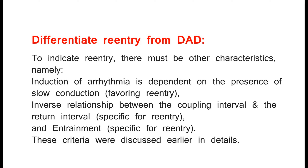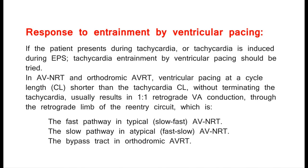Response to Entrainment by Ventricular Pacing: If the patient presents during tachycardia, or tachycardia is induced during EPS, tachycardia entrainment by ventricular pacing should be tried. In AVNRT and orthodromic AVRT, ventricular pacing at a cycle length (CL) shorter than the tachycardia CL, without terminating the tachycardia, usually results in 1:1 retrograde VA conduction through the retrograde limb of the reentry circuit — which is the fast pathway in typical (slow-fast) AVNRT, the slow pathway in atypical (fast-slow) AVNRT, or the bypass tract in orthodromic AVRT.